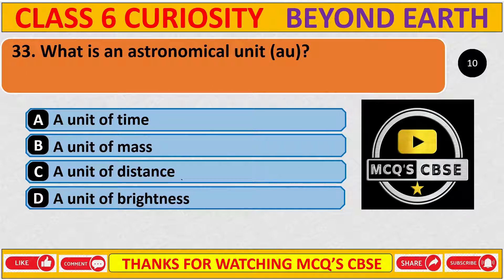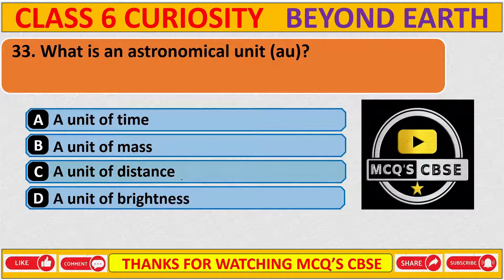What is an astronomical unit, AU? The correct answer is C, a unit of distance.